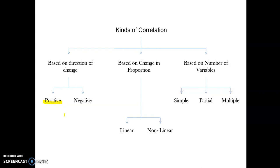Positive correlation doesn't mean only increment — it also means that if one variable is decreasing, the other will also decrease. They simply move in the same direction. For negative correlation, two variables move in opposite directions: if one increases, the other decreases. For example, if temperature goes up, sales of woolen garments come down — they are negatively correlated.